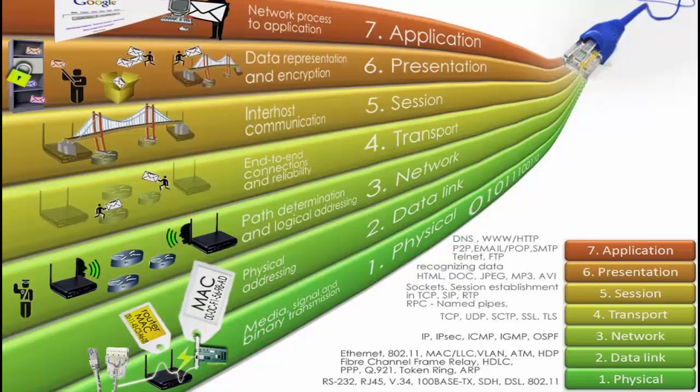For layer 3, this is the network layer — this is where your IP addresses are. Basically, for your router, if you put in 192.168.1.1 into Google Chrome or Firefox, chances are you'll bring up your Wi-Fi router, and that's the IP address to it. This is where your IP addresses live — layer 3.